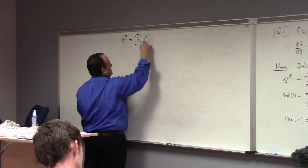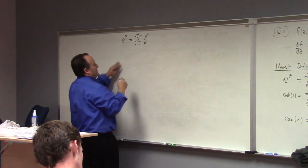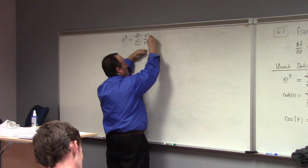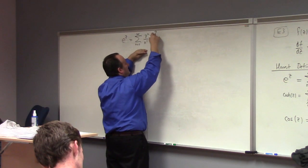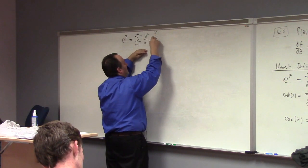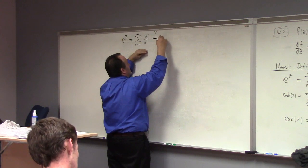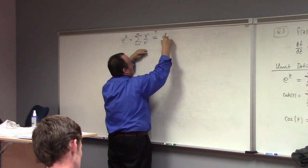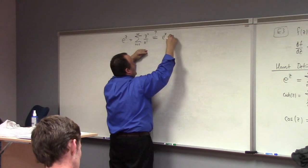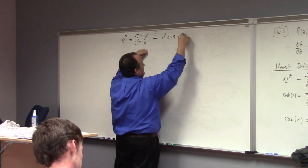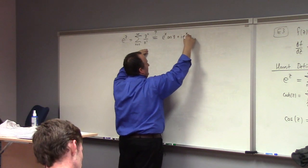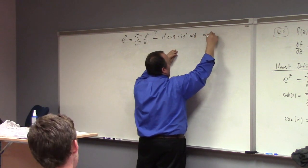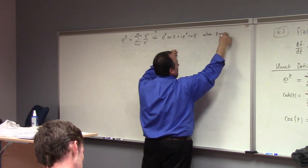You guys help me make sense of it. I want to show that this is equal to — and this is my question — why is this equal to e to the x cosine y plus i e to the x sine y when z is equal to x plus i y?